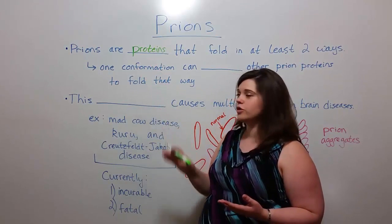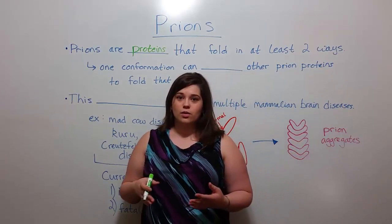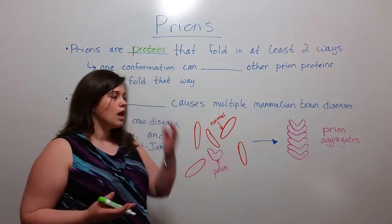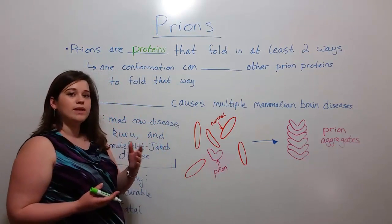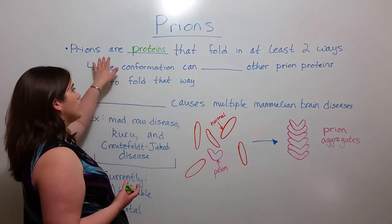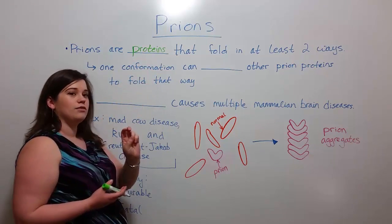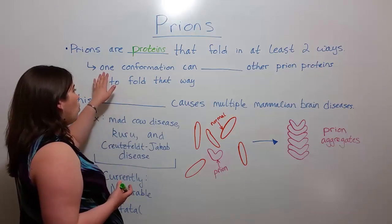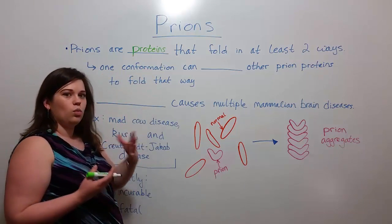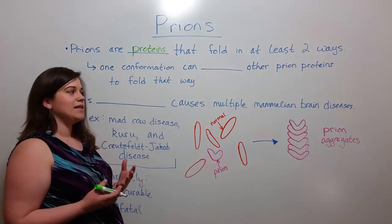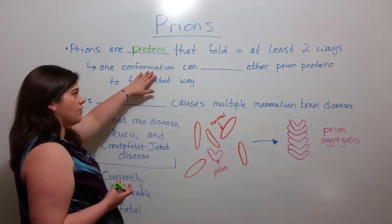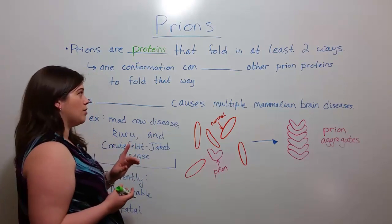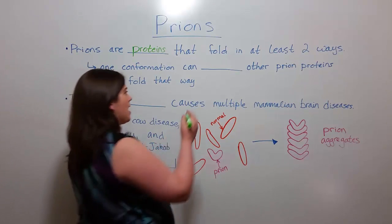When prions were first discovered, there was a lot of disagreement that this was even possible. But multiple experiments did eventually show that prions are proteins that can fold in at least two ways, and critically, one conformation — that is, one of the folding ways — can catalyze other prion proteins to fold that way.